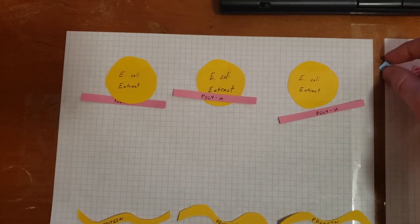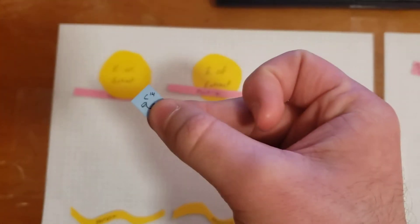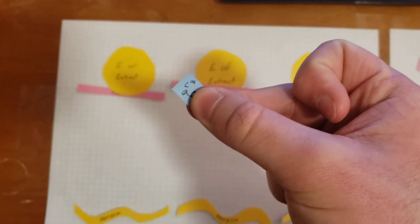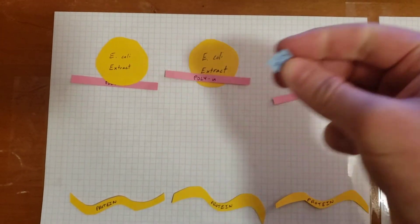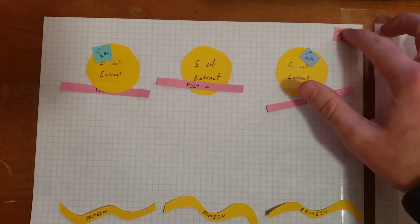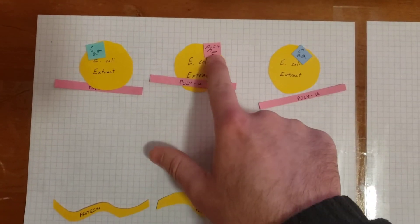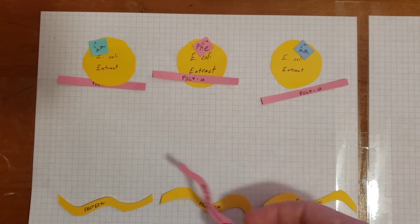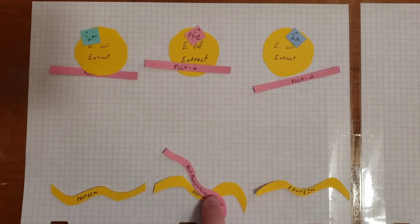Then they took each amino acid, they made them with C14, radioactive, and they gave each amino acid its own system. Now only in the phenylalanine system did they find hot protein at the bottom.